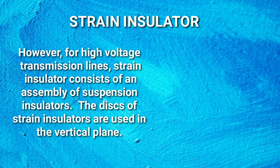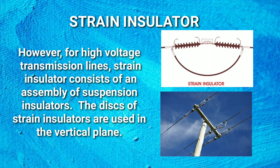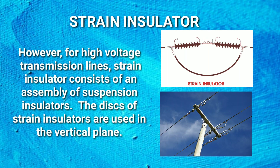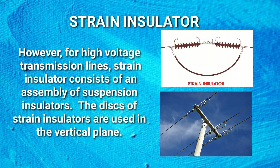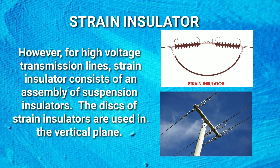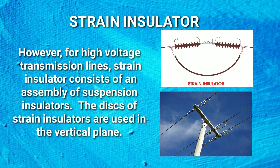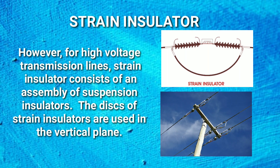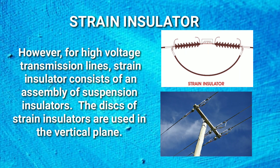However, for high voltage transmission lines, strain insulator consists of an assembly of suspension insulators. The discs of strain insulators are used in the vertical plane. When the tension in lines is exceedingly high, at long river spans, two or more strings are used in parallel.